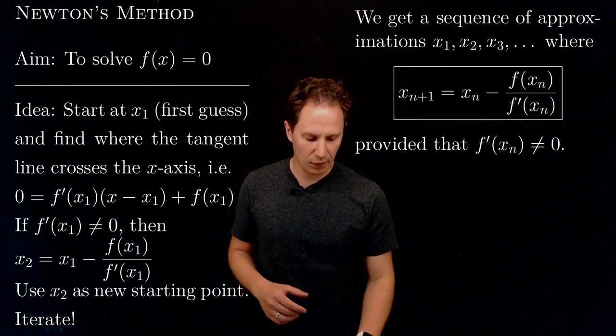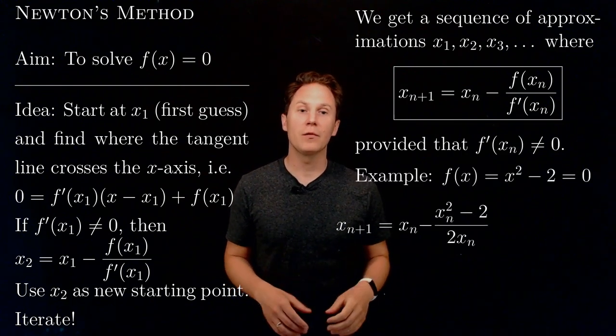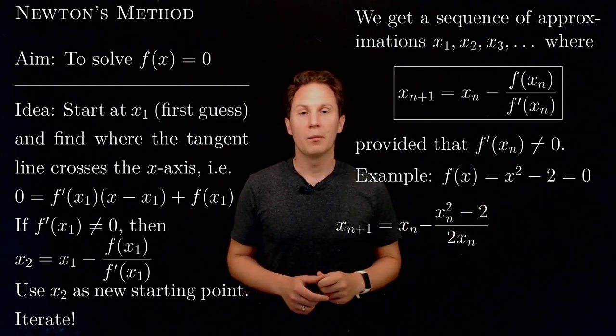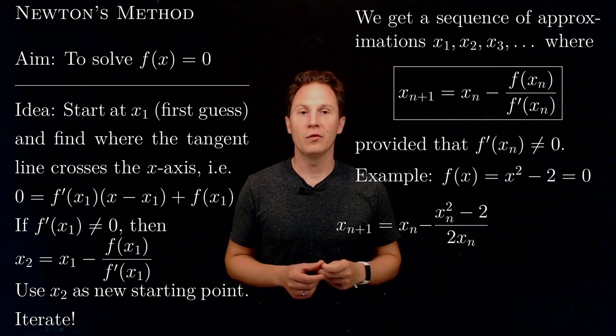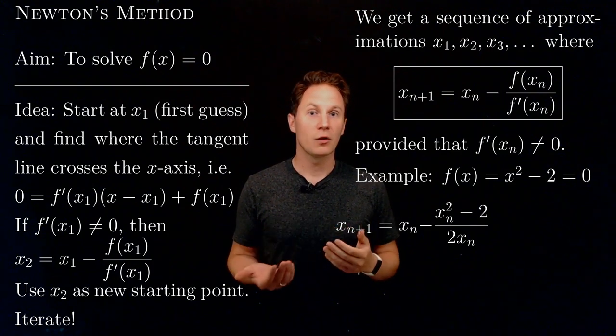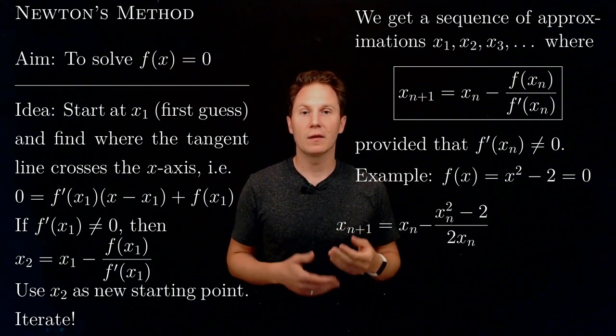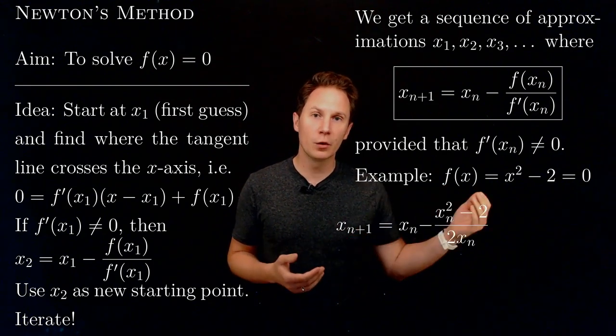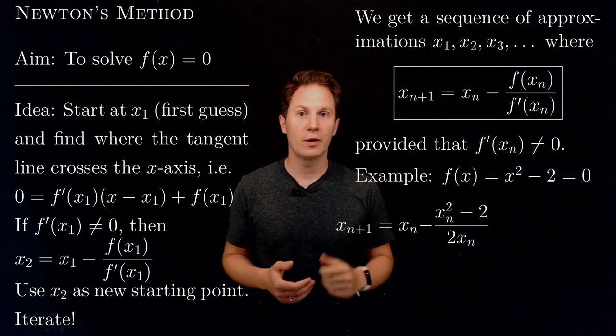Let me show you an example of that. Let's consider the function f(x) = x² - 2, and we are looking for the places where that becomes zero. Well, from simple algebra, we know that x² - 2 = 0 means that x needs to be plus or minus the square root of two. Let's look for the positive solution, the square root of two, that is.